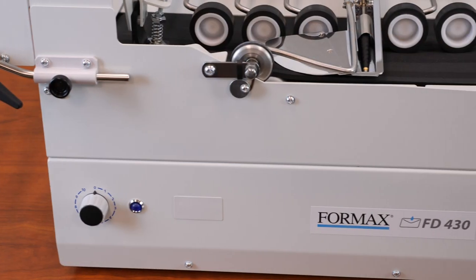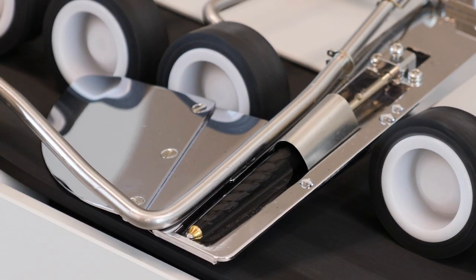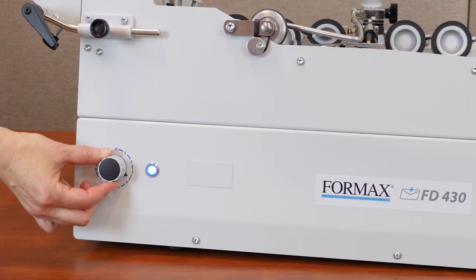The FD430 features a heavy-duty metal base, a precision moistening roller, and a variable speed control knob.